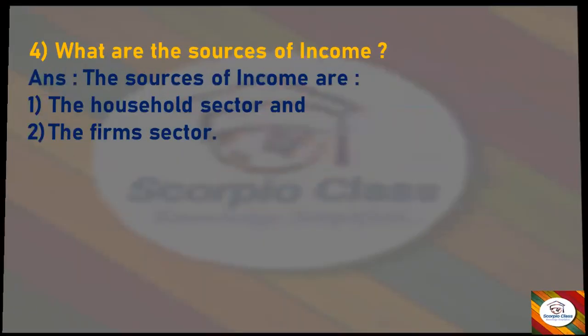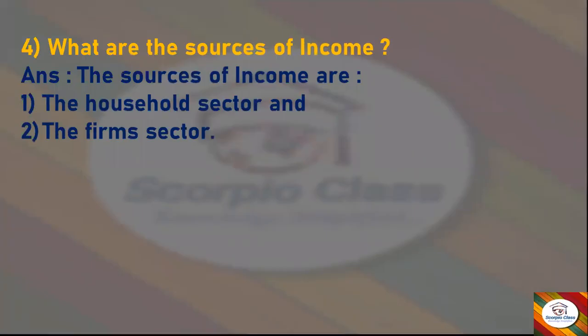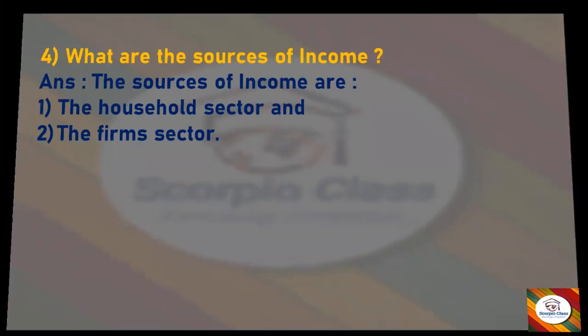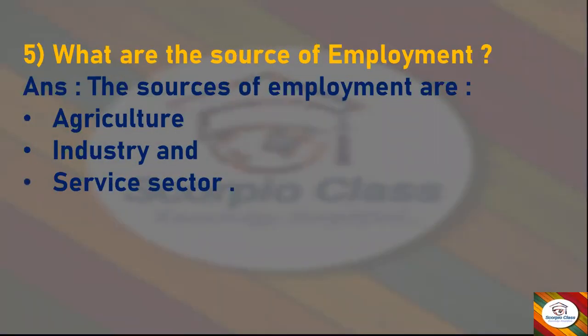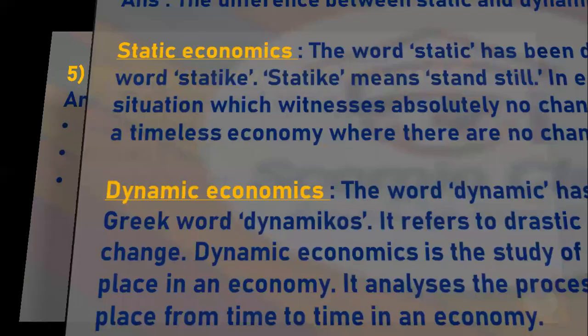Next question: what are the sources of income? Answer: the sources of income are the household sector and the firms sector. Next question: what are the sources of employment? Answer: the sources of employment are agriculture, industry, and the service sector.